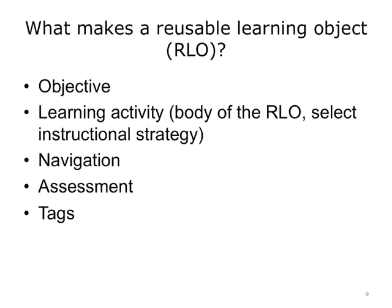The most basic parts of a learning object are: a learning objective; a learning activity — the activity is the body of the RLO selected to meet the instructional strategy; navigation to guide the learner through the session; assessment of the learner's KSA — knowledge, skills, or attitude; and tags or labels with metadata. Every learning object has descriptive information, allowing it to be easily found by a search.